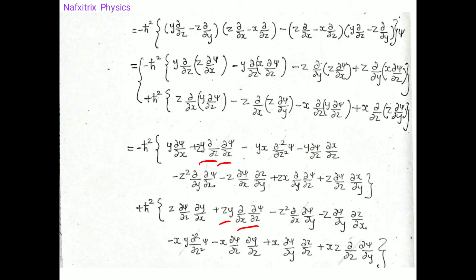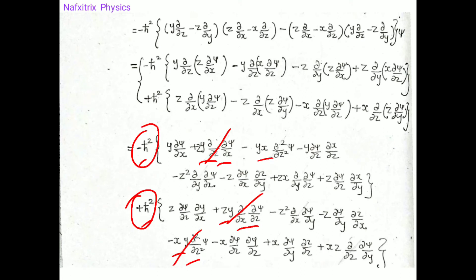One pair has -ℏ² and the other +ℏ², so they cancel. The terms with -yx·∂²/∂z² and +xy·∂²/∂z² also cancel. Similarly, the terms involving xz with ∂/∂z·∂/∂y and ∂/∂y·∂/∂z cancel out as well.